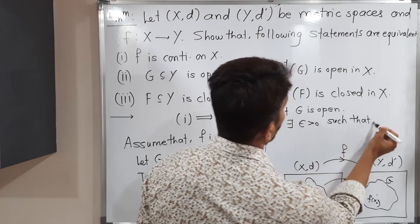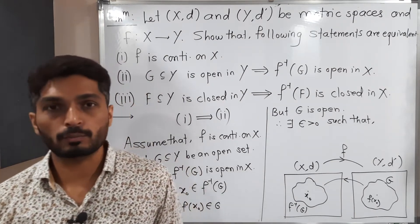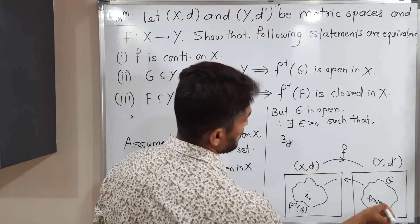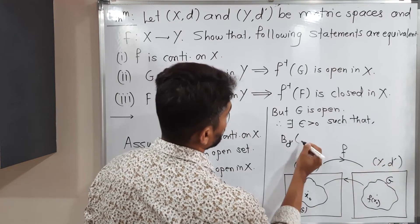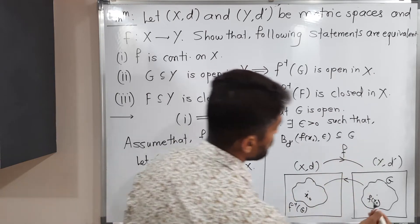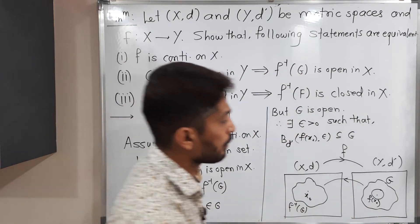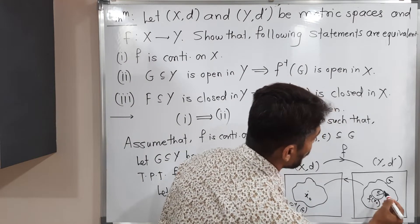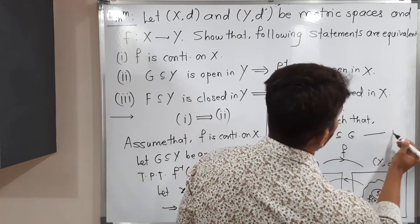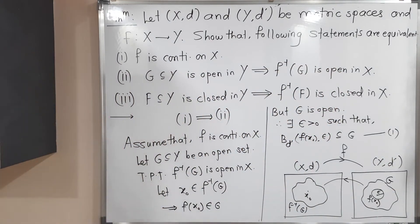Therefore, by definition of an open set, there exists ε > 0 such that the open ball B(d'; f(x₀), ε) is a subset of G. That means we have one open ball with center f(x₀) and radius ε which is a subset of G. We will call this equation (1) and use it later.